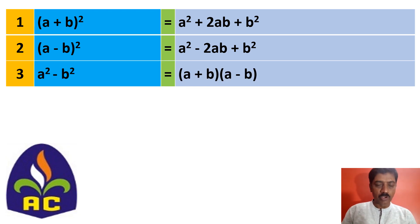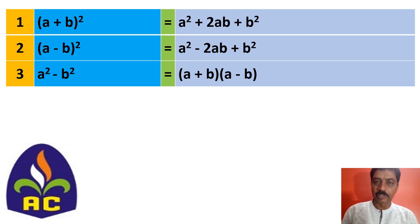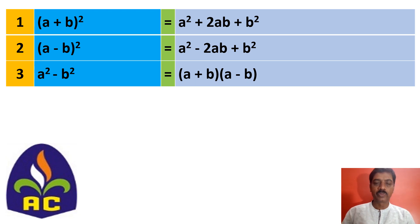The third identity: a squared minus b squared, you can write it as a plus b into a minus b, or vice versa.